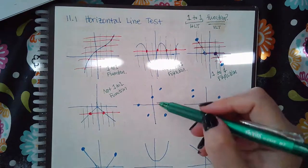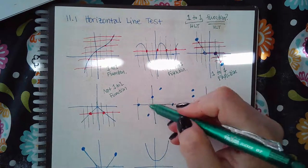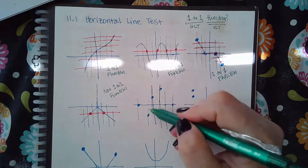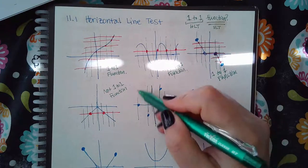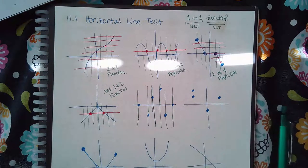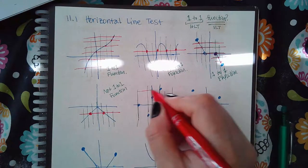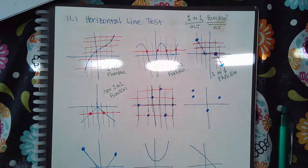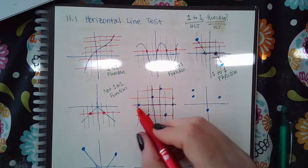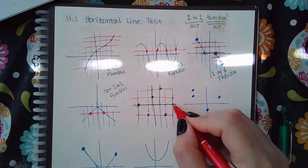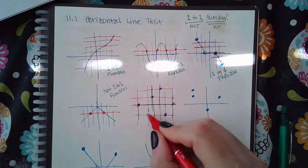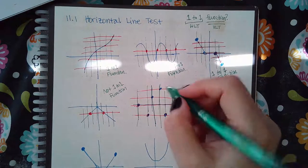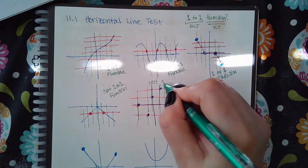Then here, we pass the vertical line test — even if I extend it all the way. But we do not pass the horizontal line test, because on the x-axis it touches twice, and on this one it touches twice as well. So it fails double time. This one is not a one-to-one function.